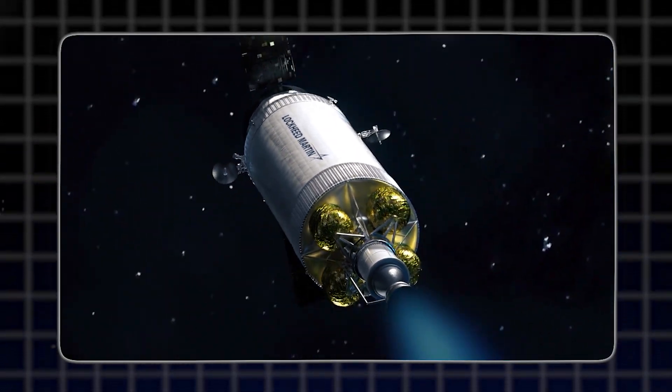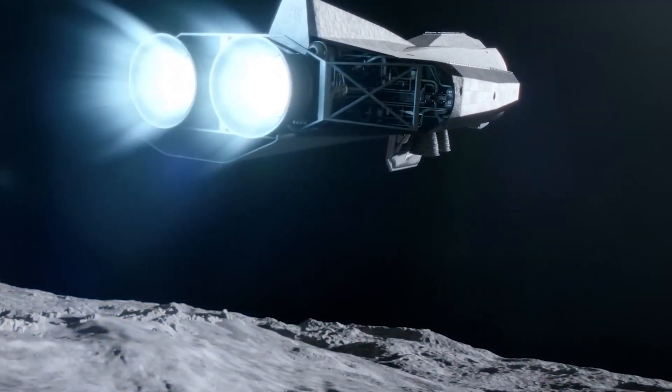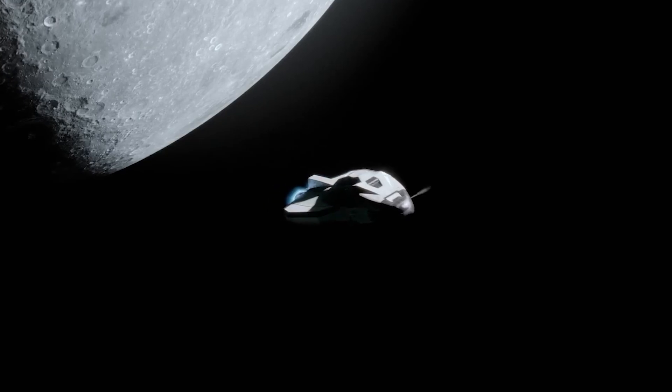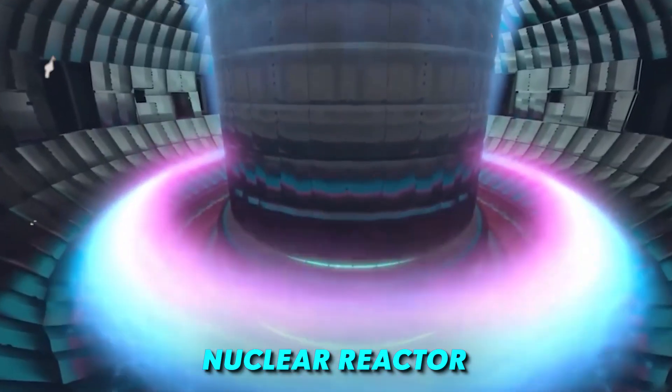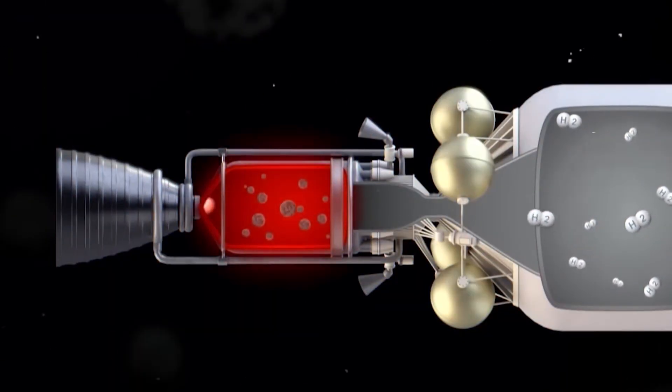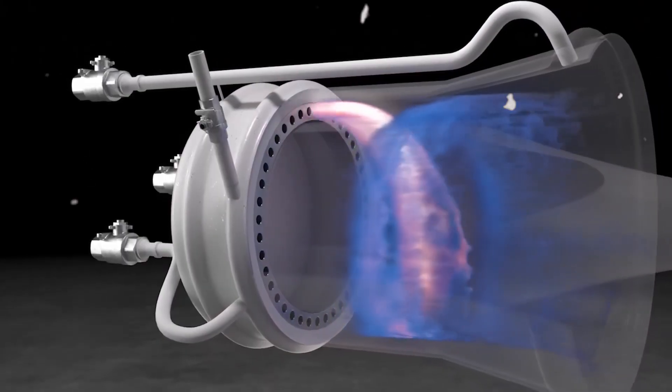Nuclear thermal propulsion is the more conventional of the two, as rockets that use nuclear energy in this manner will effectively use a nuclear reactor to heat a propellant such as hydrogen. Afterwards, it gets expelled through a nozzle, producing the thrust needed to push the rocket.